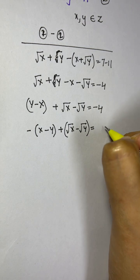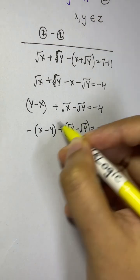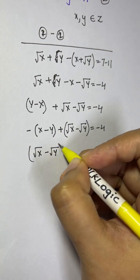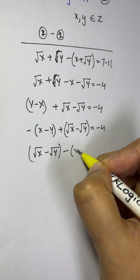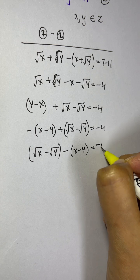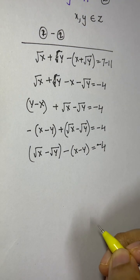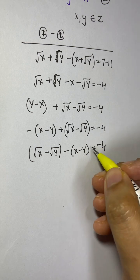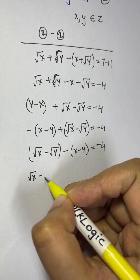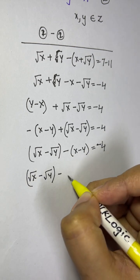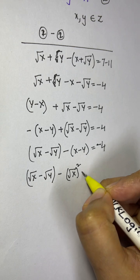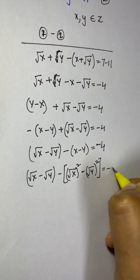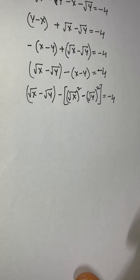Rearranging, we have root x minus root y minus of x minus y equals negative 4. Now x and y can be written as root x squared and root y squared respectively, so x minus y becomes root x squared minus root y squared, giving us: root x minus root y minus of root x squared minus root y squared equals negative 4.